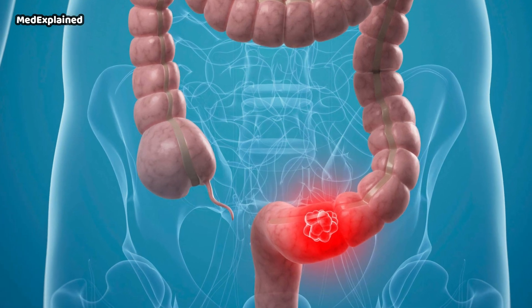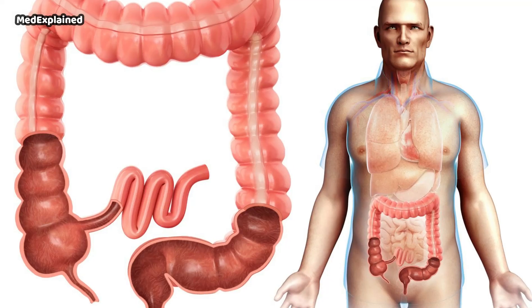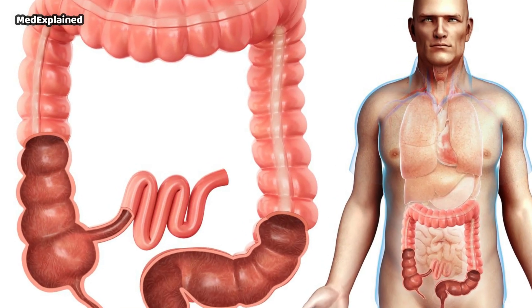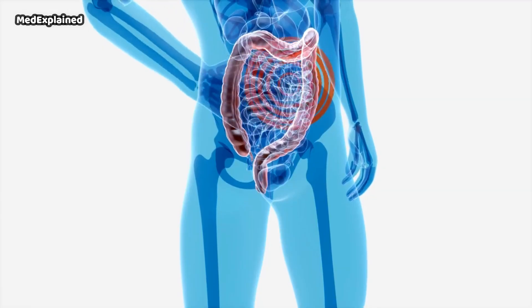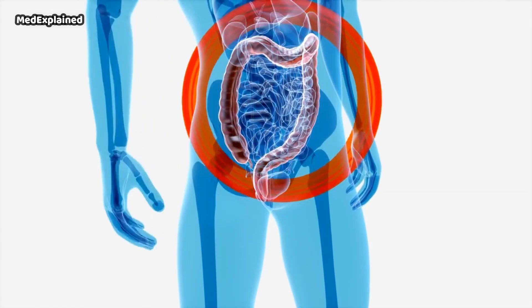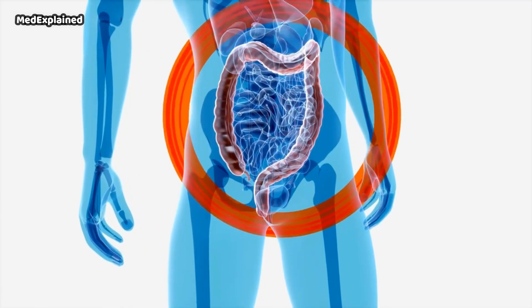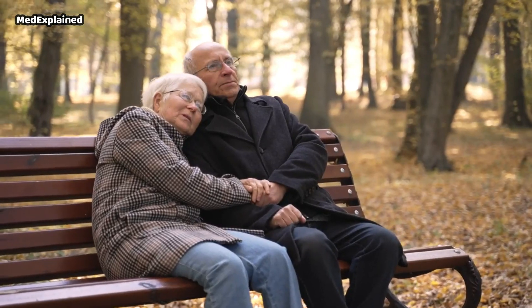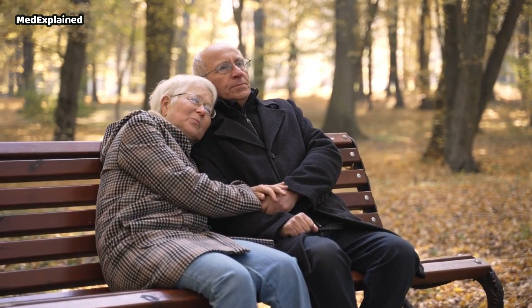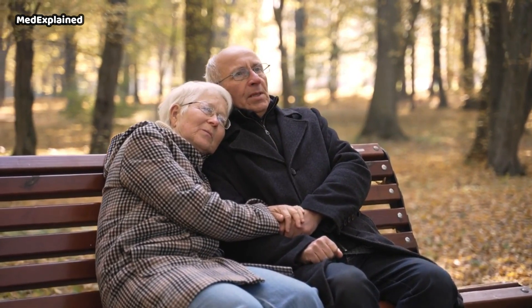Colon cancer is a type of cancer that starts in your colon — that means large intestine — or rectum. Your colon and rectum are the organs that make up the lower portion of your digestive system. Colon cancer typically affects older adults, though it can happen at any age.